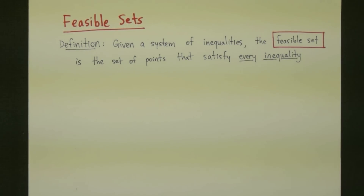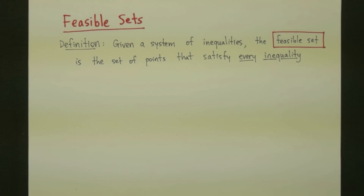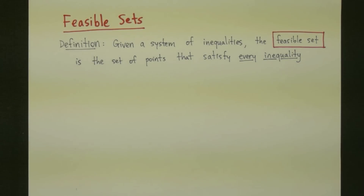If we are given a system of inequalities, we will call the feasible set all of the points that will satisfy every inequality. In order to be in the feasible set, the point must satisfy every inequality in the system.